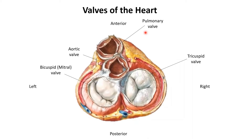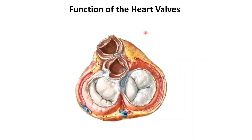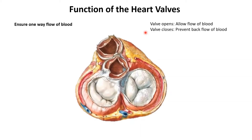Let's see how these valves work. The function of the heart valve is to ensure one-way flow of blood. When the valve opens it allows blood to flow through it and once it closes it prevents the backflow of blood. This is what the valves look like when they're opening and closing alternately during every contraction of the heart.